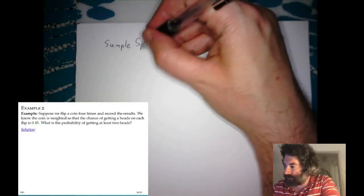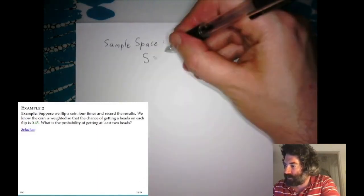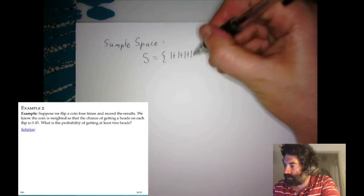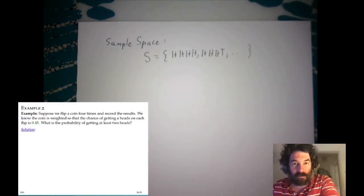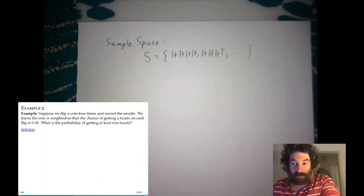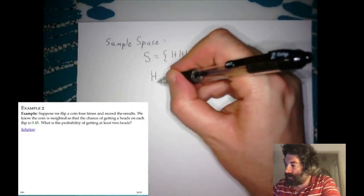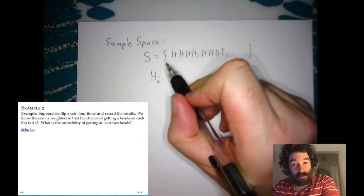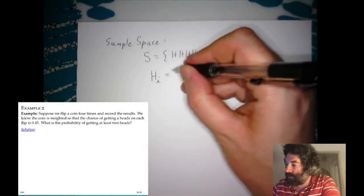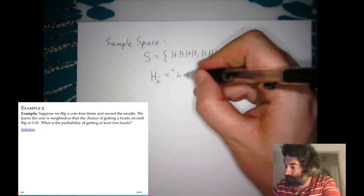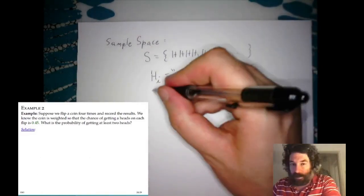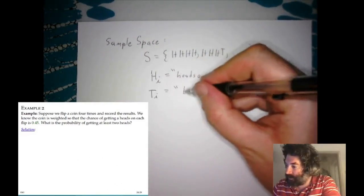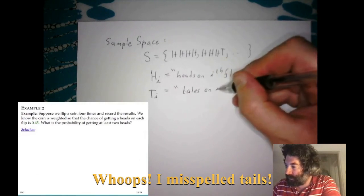The sample space is the set of all possible sequences of four flips — heads/heads/heads/heads, heads/heads/heads/tails, tails, and so on — all possible lists of four flips. I'll label H_i (where i is a number between 1 and 4) to be the event where we get heads on the i-th flip, and T_i to be the event where we get tails on the i-th flip.